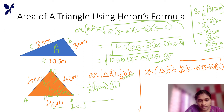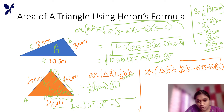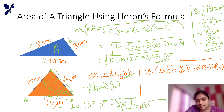Square root of BC squared minus PB squared. BC length is 4 cm, BP is 2 cm. So: 4 squared minus 2 squared = 16 minus 4 = 12. The height is the square root of 12. We can simplify this — 12 equals 2 × 2 × 3, so the square root of 12 simplifies.